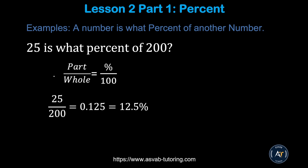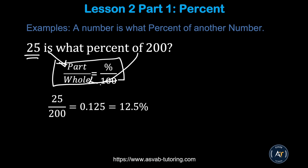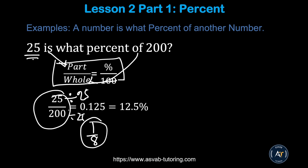The formula is: part over whole equals percent over 100. This will help you everywhere. Key keywords: 'is' means the part, 'of' means the whole. Example: 25 is what percent of 200? 'Of' means whole, so whole = 200, part = 25. So 25/200 — simplify by dividing both sides by 25 to get 1/8, which equals 0.125. Move two decimal places left to right to get 12.5%.